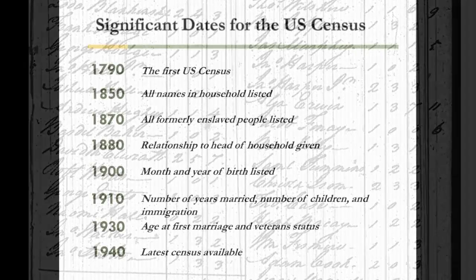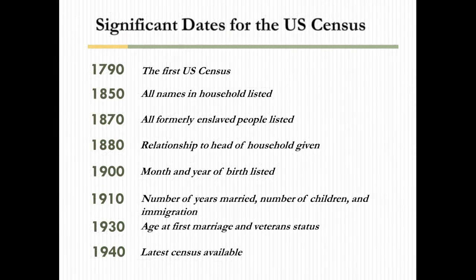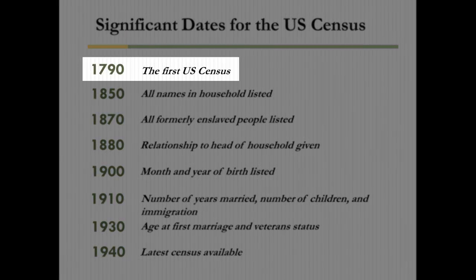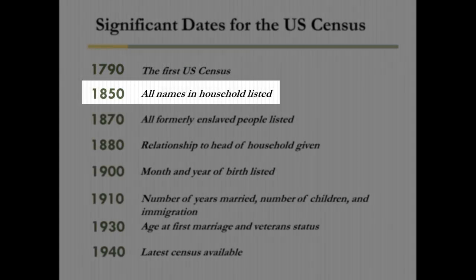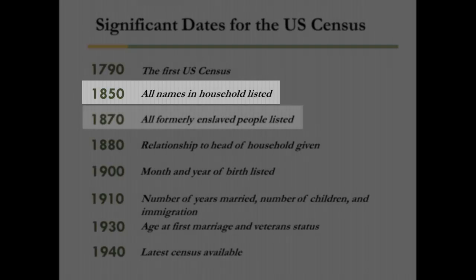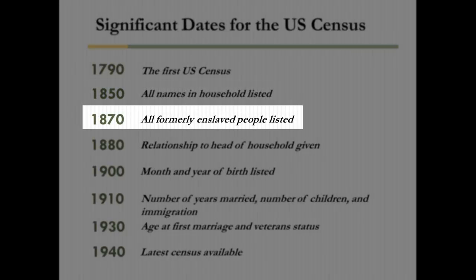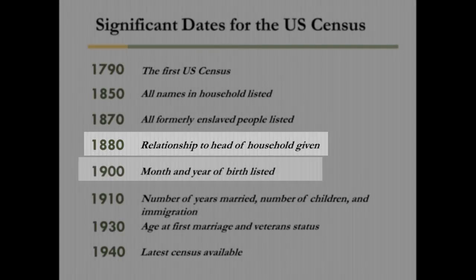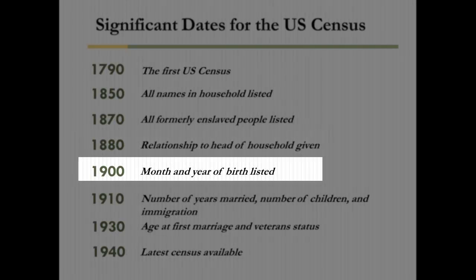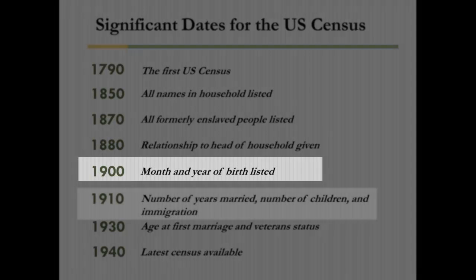Here are some key dates to remember when looking at the Census. 1790: the year of the first United States Census. 1850: the first year everyone in the household was listed by name. 1870: the first year all formerly enslaved people were listed by name. 1880: the first time relationship to the head of household was given. 1900: listed the month and year of birth.